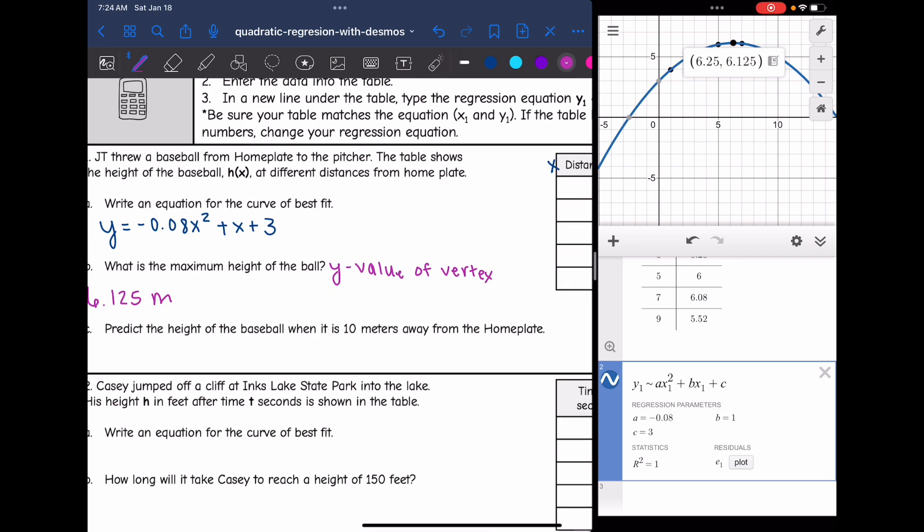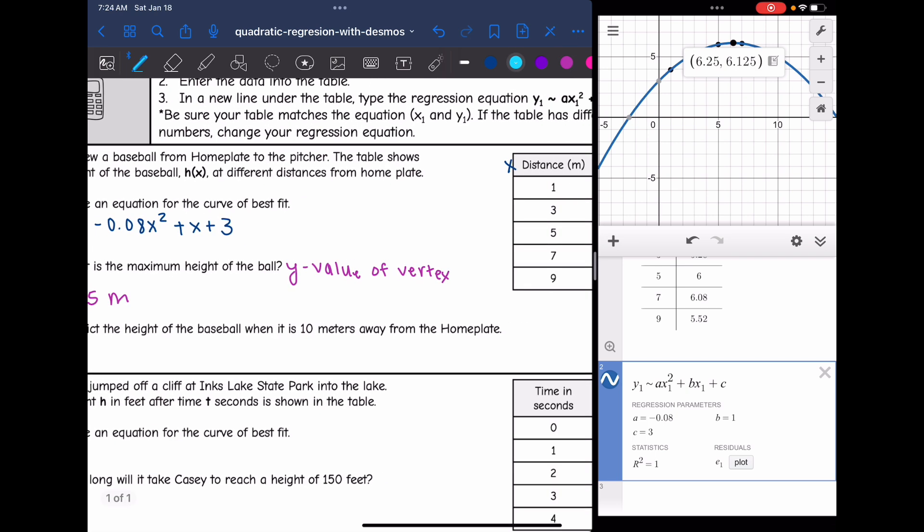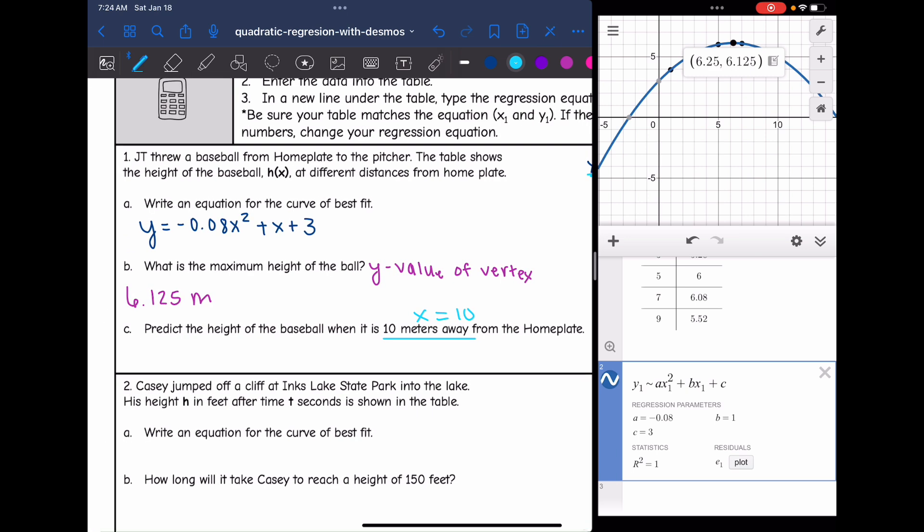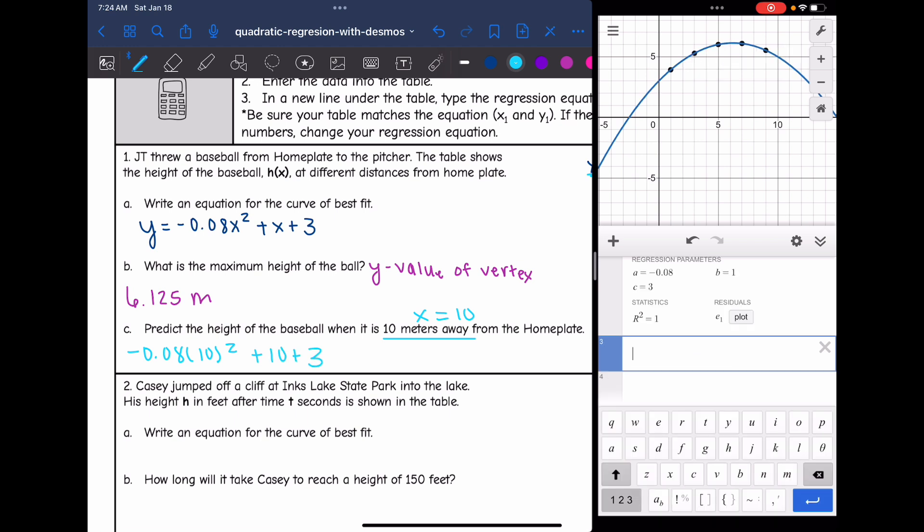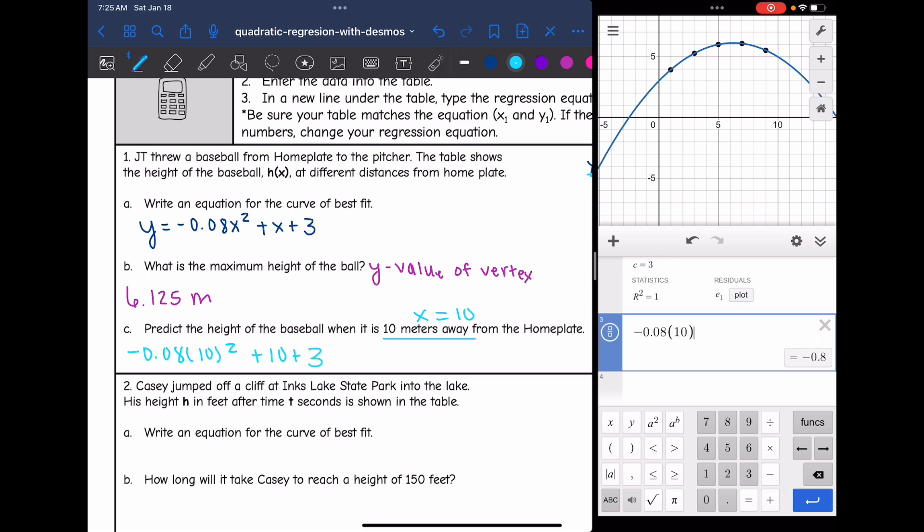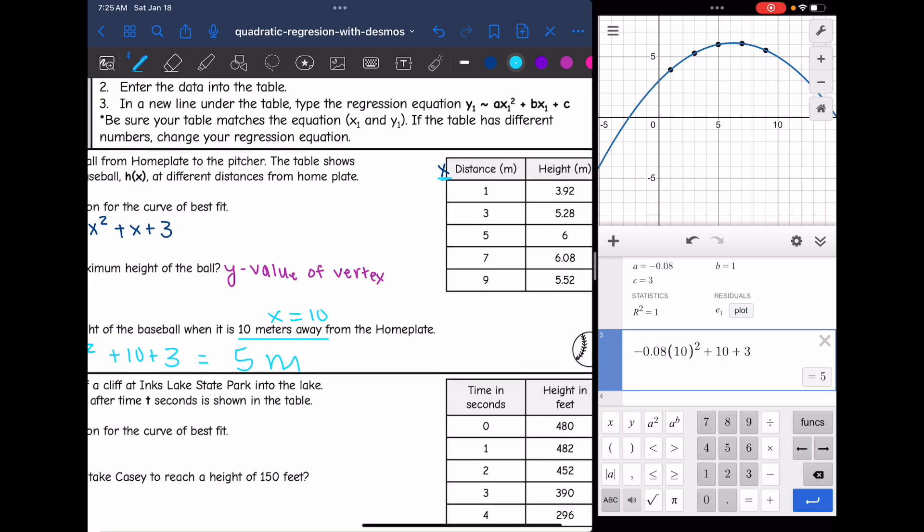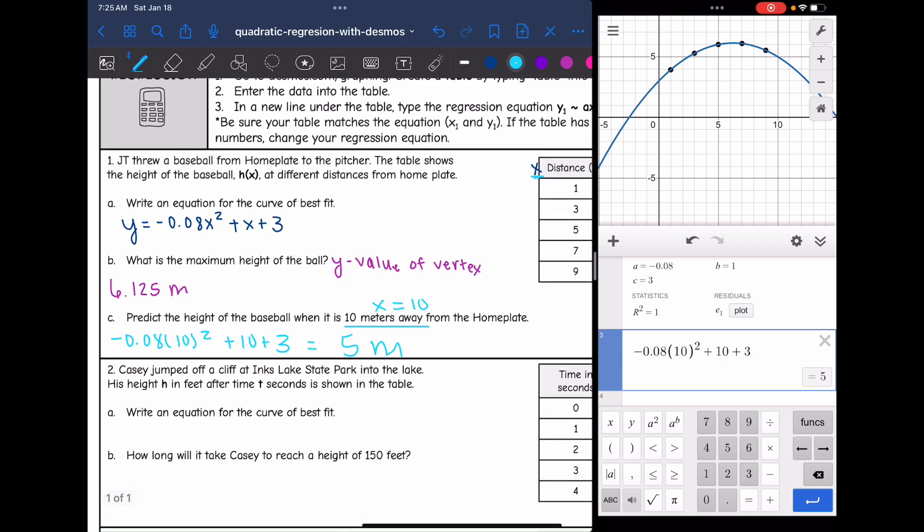And then the next question says predict the height of the baseball when it is 10 meters away from the home plate. So 10 meters away from the home plate is the distance from the home plate, which is an x value. So I'm going to replace x with 10 in my equation. And that will tell me the height of the baseball when we're 10 meters away from home plate. So I will do negative 0.08 times 10 squared plus 10 plus 3. And I get 5. So it is 5 meters whenever it is 10 feet away from home plate.